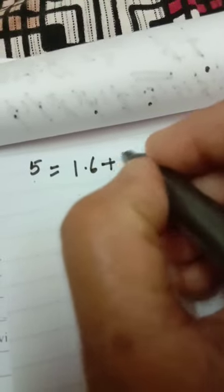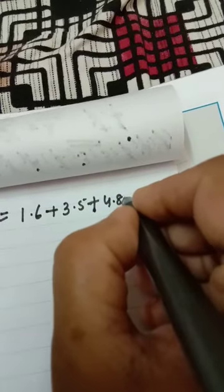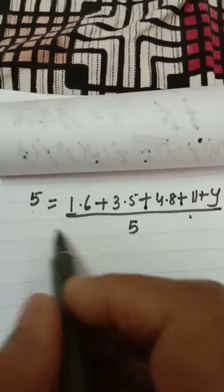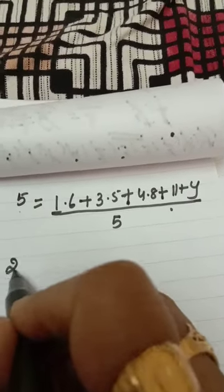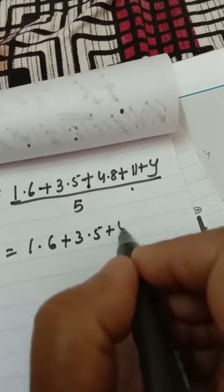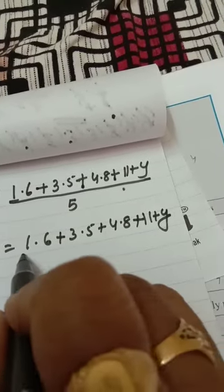That you have to add: 1.6 plus 3.5 plus 4.8 plus 11 plus y, divided by how many observations are there? 5. 1, 2, 3, 4, 5. Cross multiply, dividing number will be multiply here. 5 times 5 are 25, equal to 25 equals 1.6 plus 3.5 plus 4.8 plus 11 plus y. You have to add these numbers.